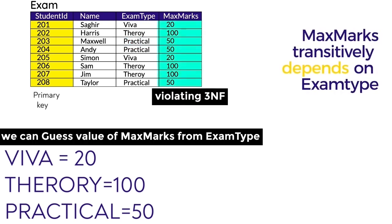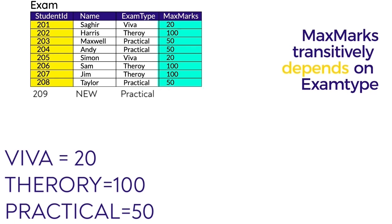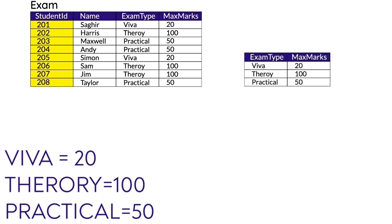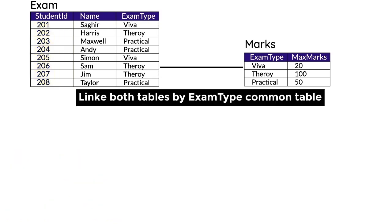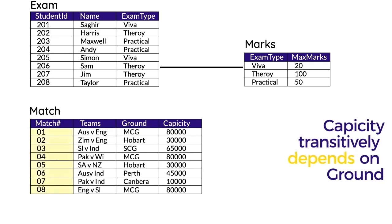So if Student ID 209 opts for a practical exam, we already know the maximum marks would be 50. This is a classic case of violating Third Normal Form. We break the Maximum Marks column out into another table. Now there is no transitive dependency between the tables.